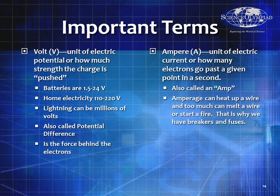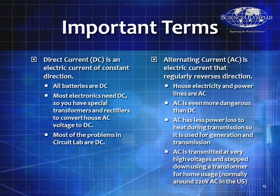A volt is a unit of electrical potential — how much strength the charge is pushed. Most batteries are 1.5 to 24 volts; home electricity is 110 to 220 volts AC. Lightning is DC and can be millions of volts. The ampere is a unit of electric current, measuring how many electrons pass a given point per second, usually in coulombs per second. Too much amperage can melt a wire and start a fire, which is why we have breakers and fuses. Direct current flows in the same direction — all batteries are DC, and most electronics need DC, requiring transformers and rectifiers to convert AC wall power to DC.